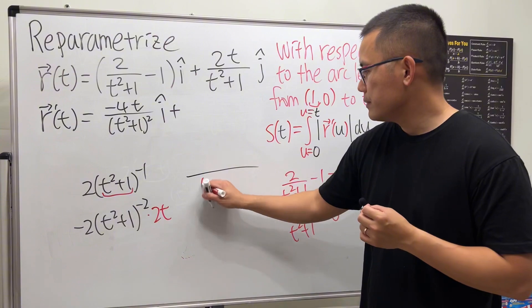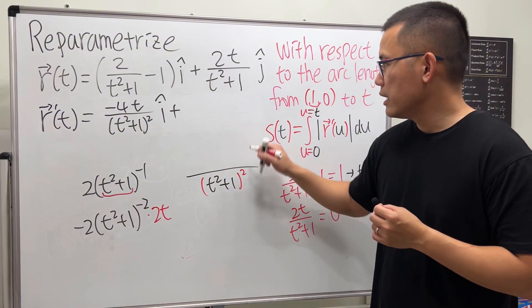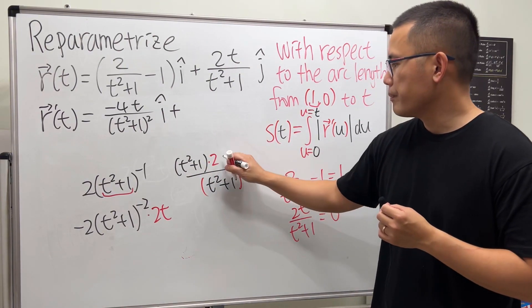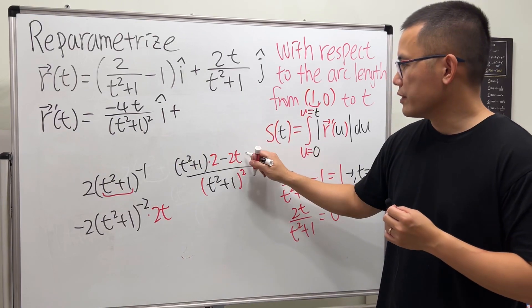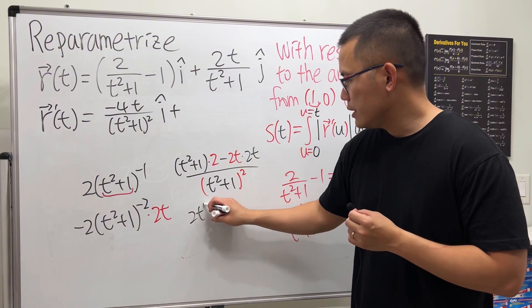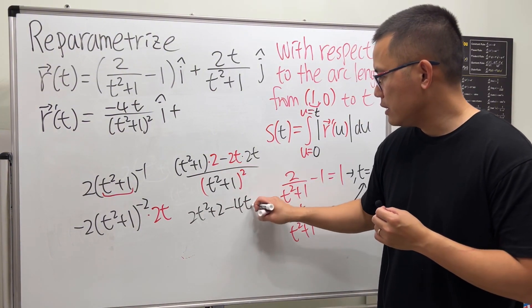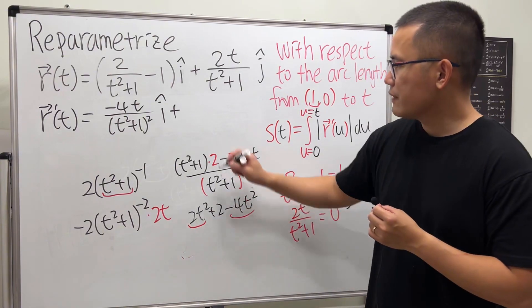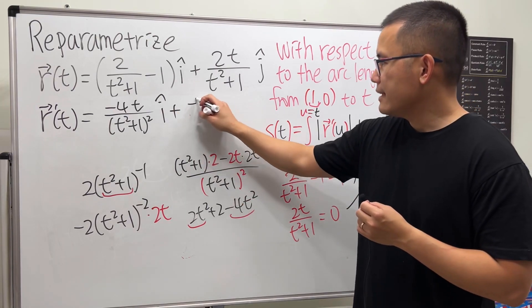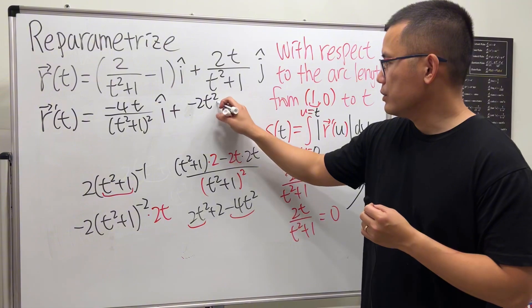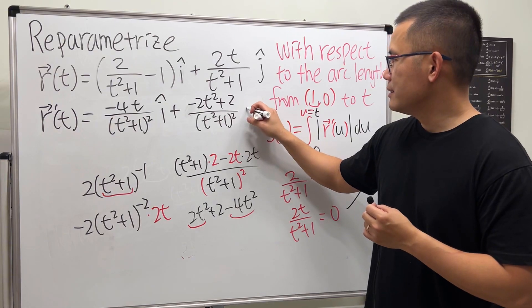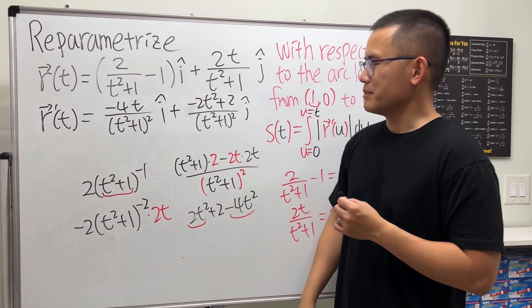Applying the quotient rule to 2t over (t² + 1): square the bottom, then bottom times derivative of the top which is 2, minus the top function times the derivative of the bottom. Cleaning that up gives 2t² + 2 minus 4t², so we have negative 2t² + 2 over (t² + 1) squared. Notice the denominators of both components are the same, which is convenient.